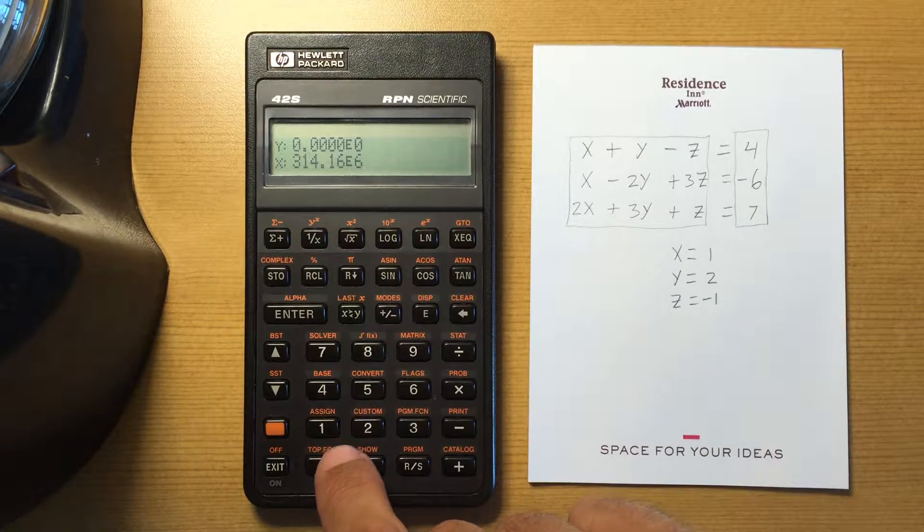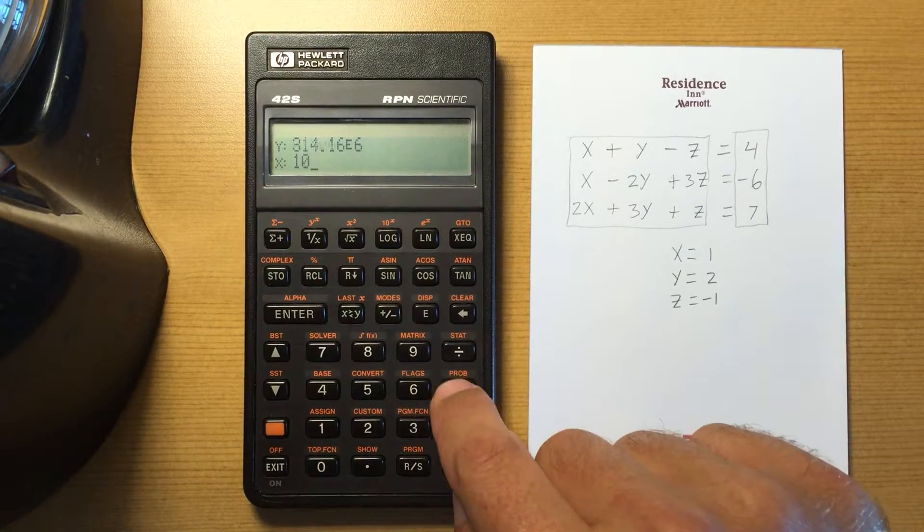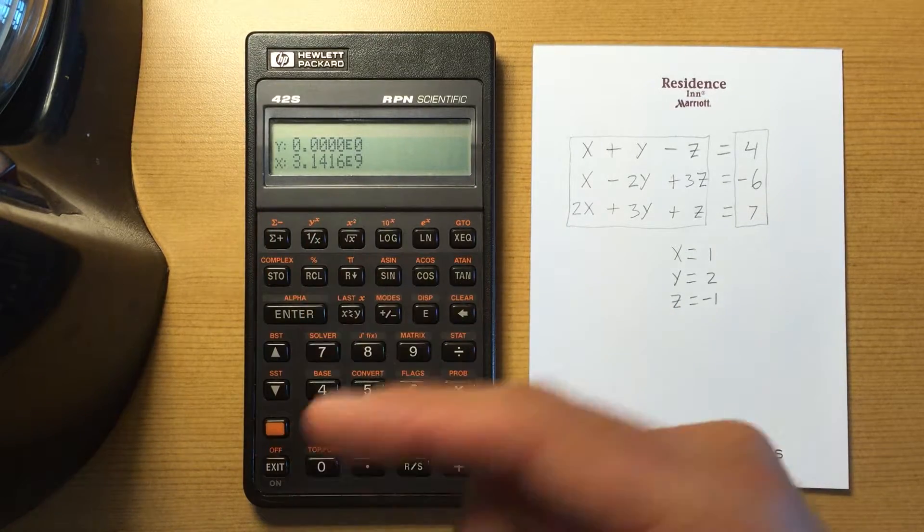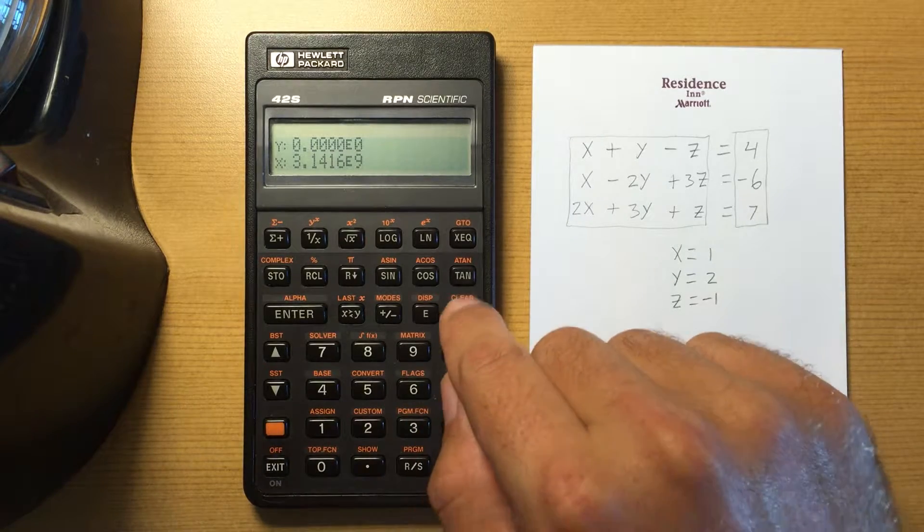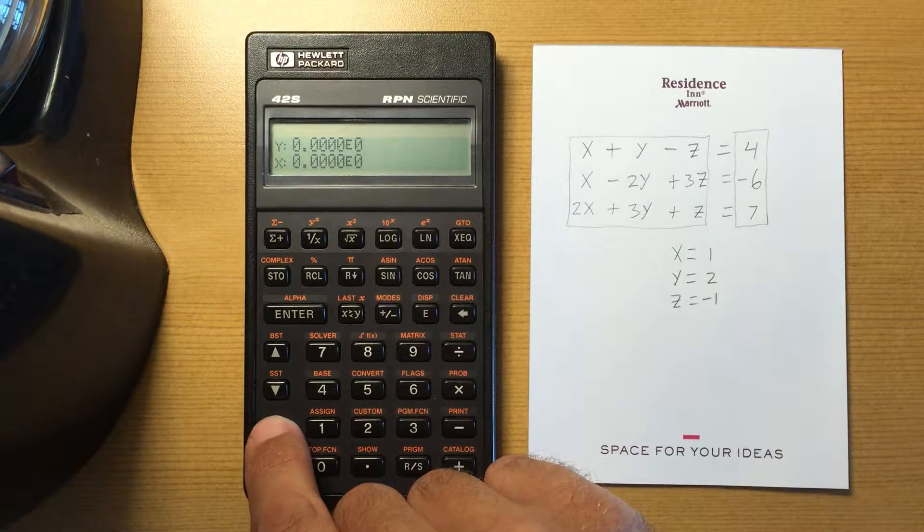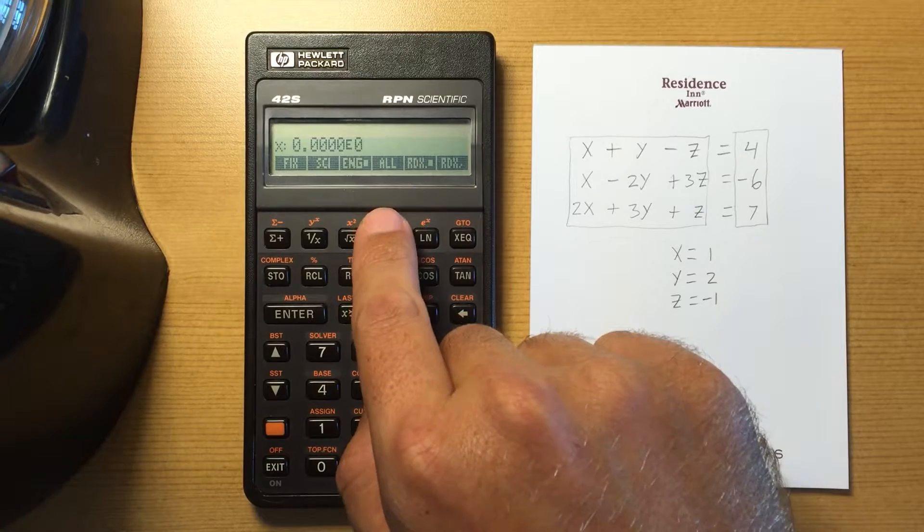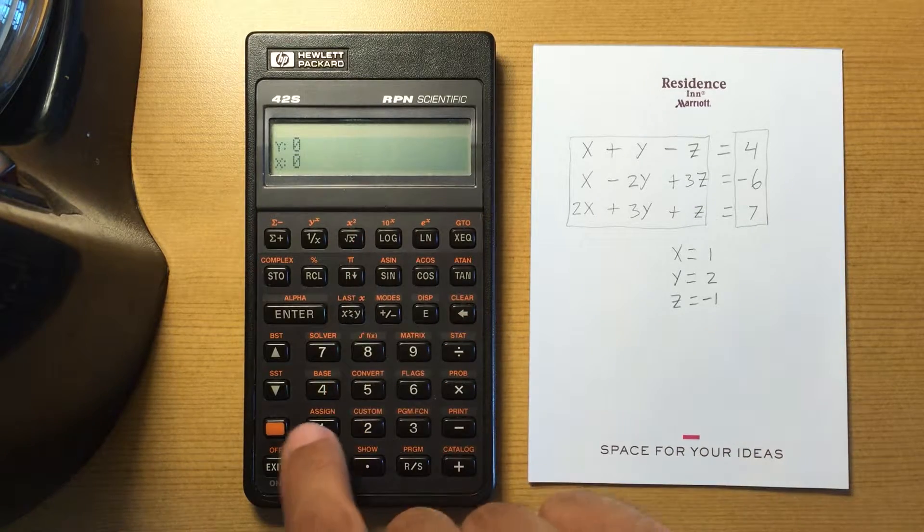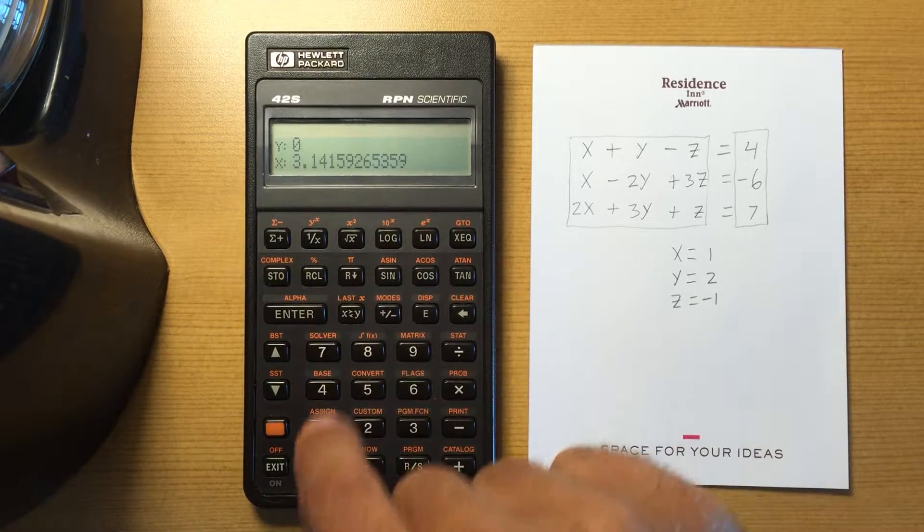So it will always show to a multiple of six or multiple of three. So now it's times ten to the ninth. And then last mode or last display is all. So that will show all of the digits that this is capable of.